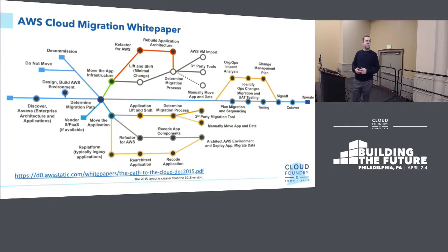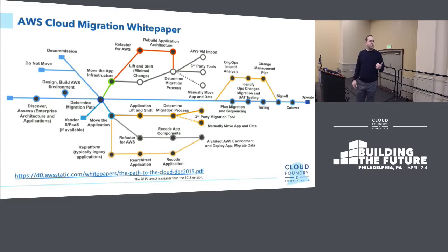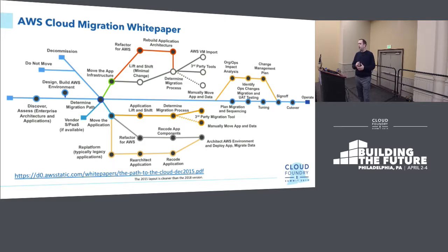Some of the strategies people use to get to the cloud follow this AWS Cloud Migration White Paper, during which a series of consultants for Amazon and their partner ecosystem mapped out the ways that organizations take their existing or new assets up into the cloud. This is the 2015 layout — there's a 2018 revision, but I like this one better. The nice part is you can apply the same principles to Pivotal Cloud Foundry, any Cloud Foundry distributions, Azure, or just about anywhere.